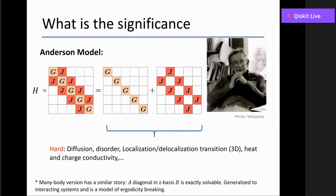The Anderson model explains diffusion, disorder, localization, delocalization transitions, and charge conductivity. The many-body version has a similar story: one piece is diagonal in the z-basis and another is exactly solvable. Again you have sums of two easy pieces, but finding a common basis for the whole thing is very difficult, especially as the matrices get larger and larger — the so-called thermodynamic limit.